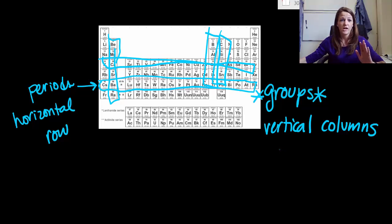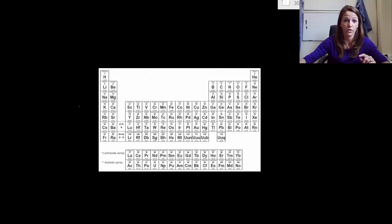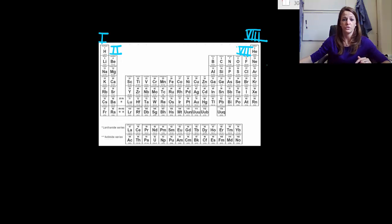So now we have two words down. We know that periods are across. We know that groups are up and down. Now I want to point out four very important groups. The first one is going to be group one. Second one is going to be group two. The third one is going to be group seven. And then the last one up here is going to be group eight. So let's go through each one of these individually.